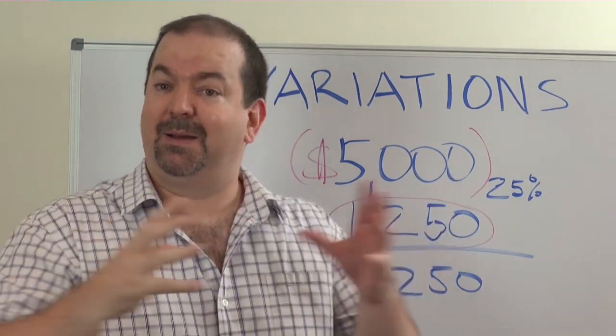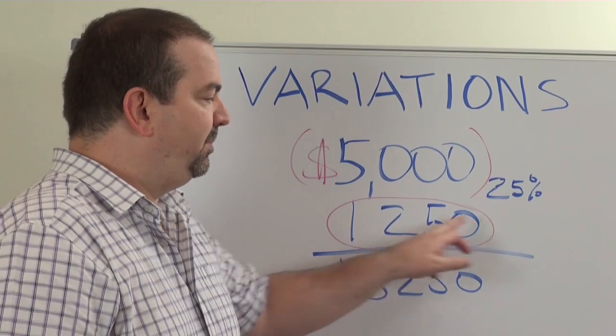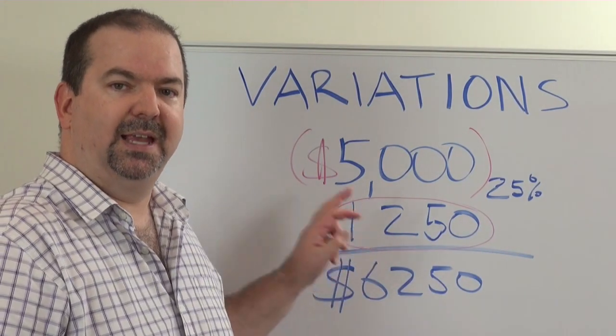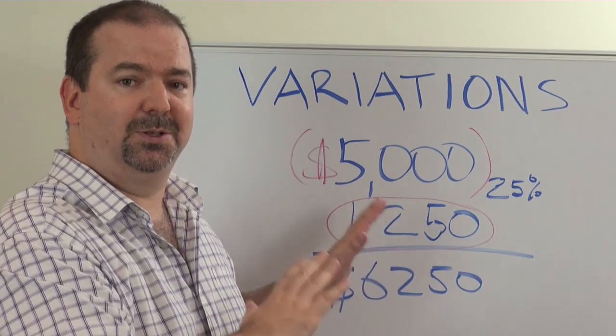If you don't do that and you haven't come up with that agreed value before you enter the contract, the builder's fully entitled to do this and keep that building margin. And it's actually fair for them to do it, so I'm not saying they're doing the wrong thing.